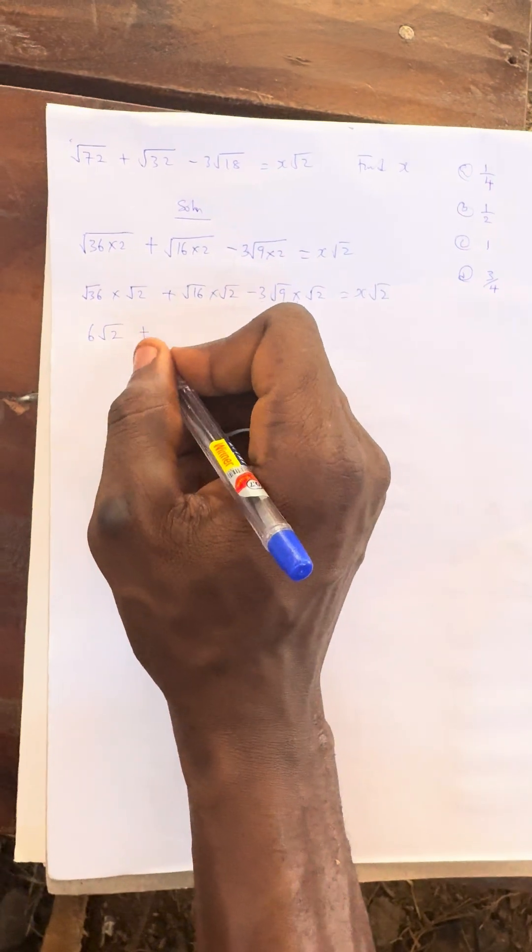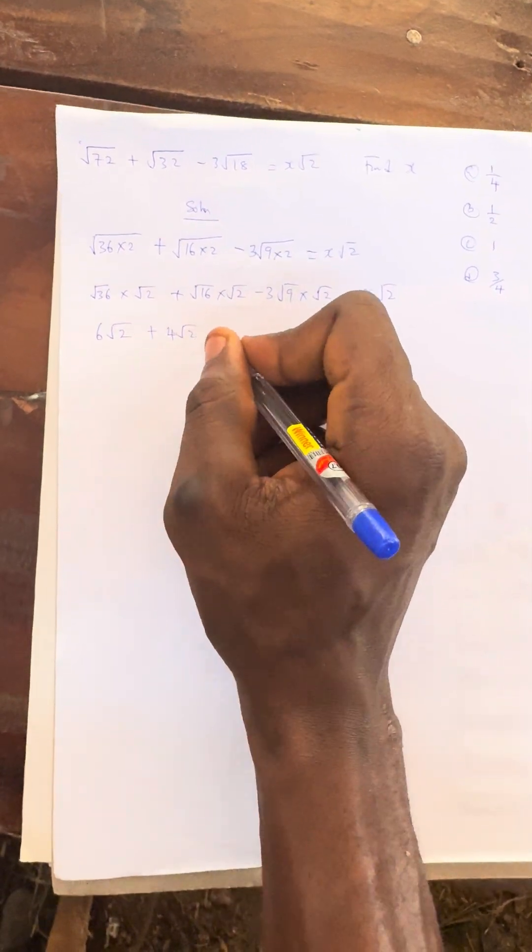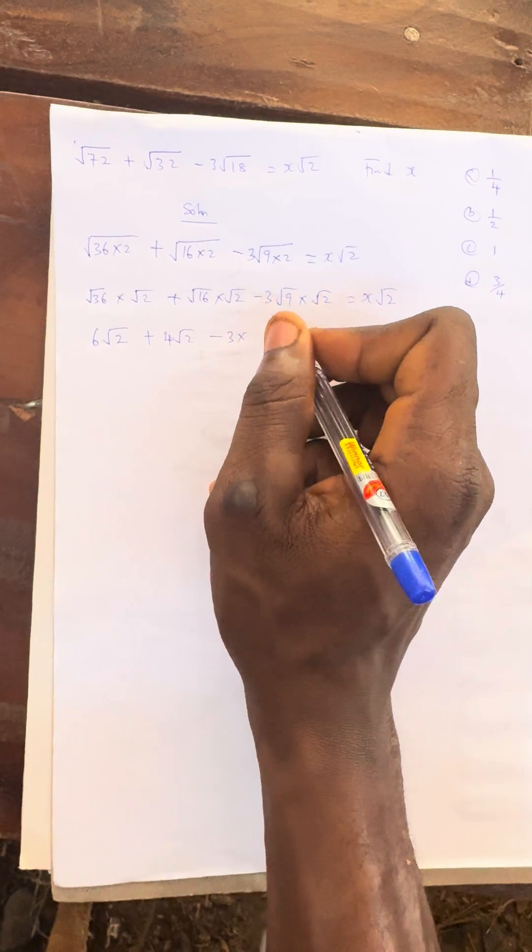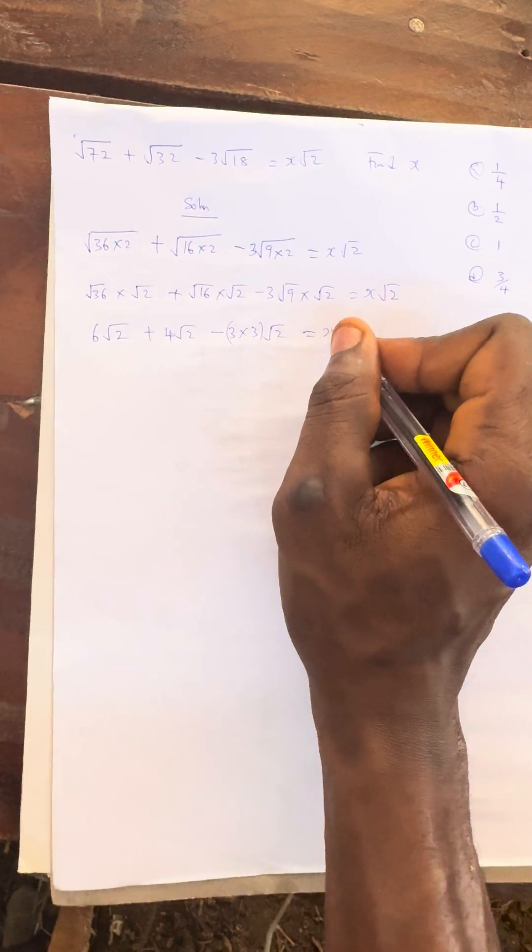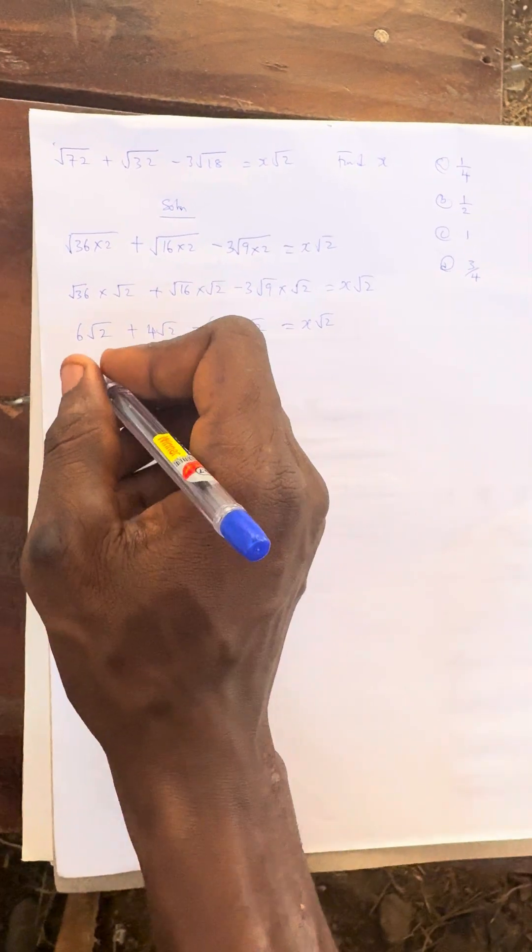√36 is 6, so 6√2 + √16 is 4, so 4√2 - 3 × √9 is 3, then × √2, equals x√2.